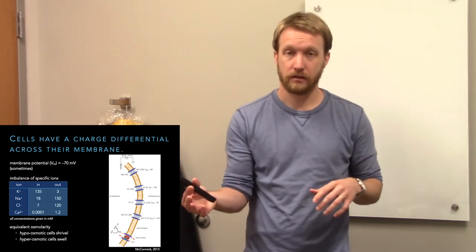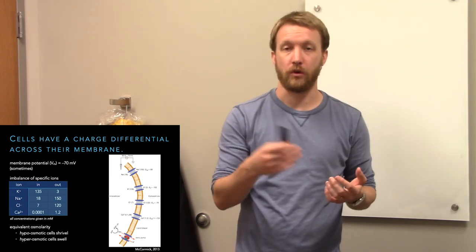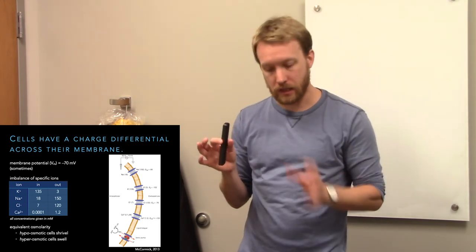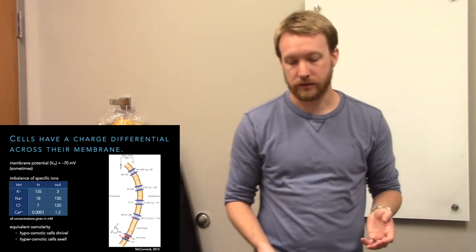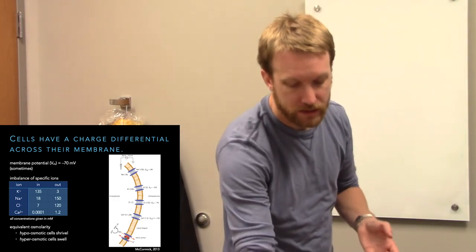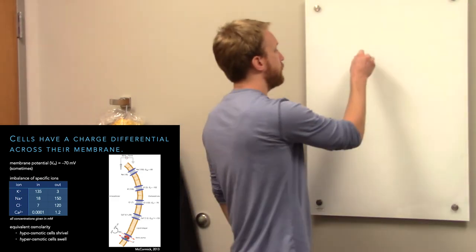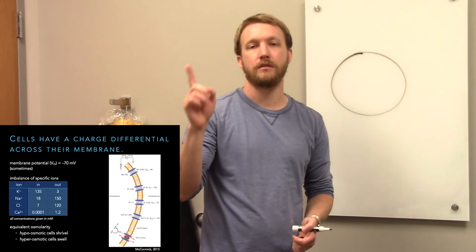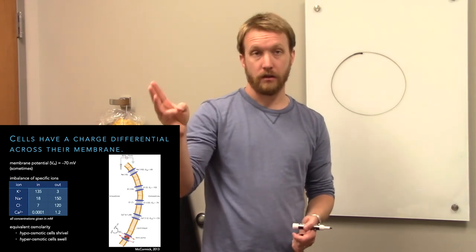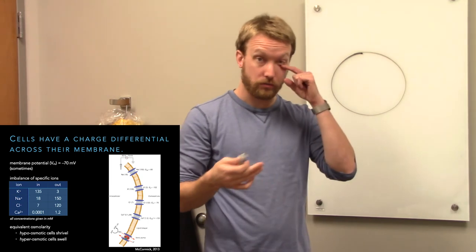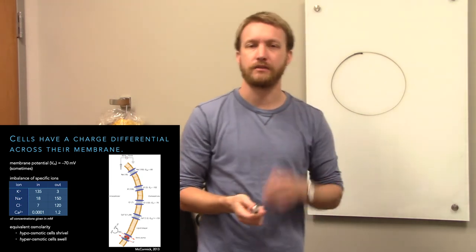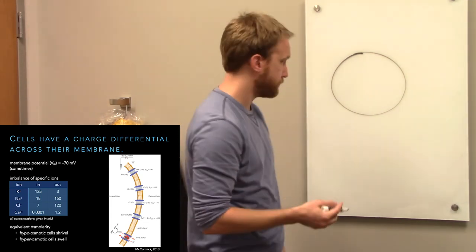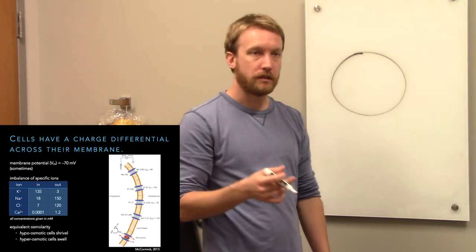Even though there's roughly the same amount of stuff inside as outside, the devil's in the details — what stuff is there in the cell and out? There are only a few ions we really need to think about: sodium, potassium, and chloride. We'll consider calcium, but there's almost no calcium flux at rest, so we can sweep it under the table. We'll introduce it just so we remember that intracellular calcium levels remain low. We have a lot of sodium outside compared to inside, a lot of chloride outside compared to inside, very low calcium across the board, and high levels of potassium inside compared to outside.